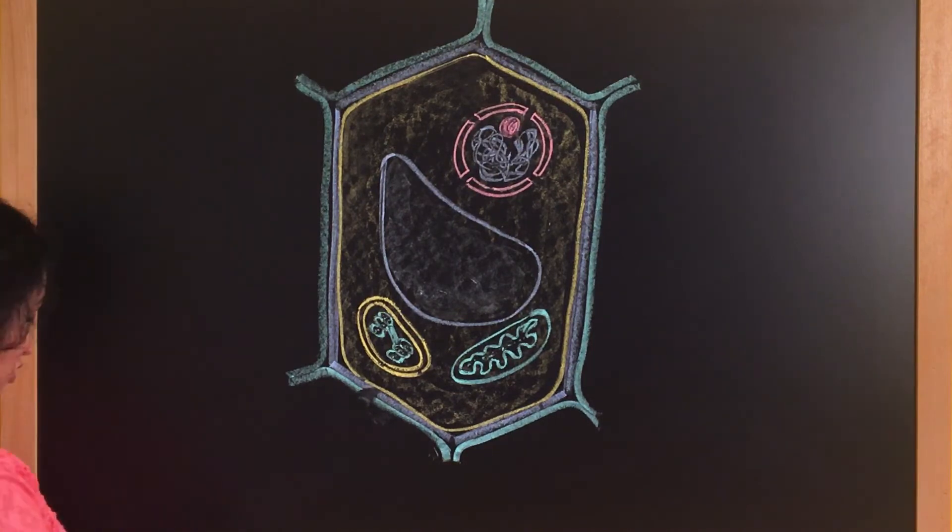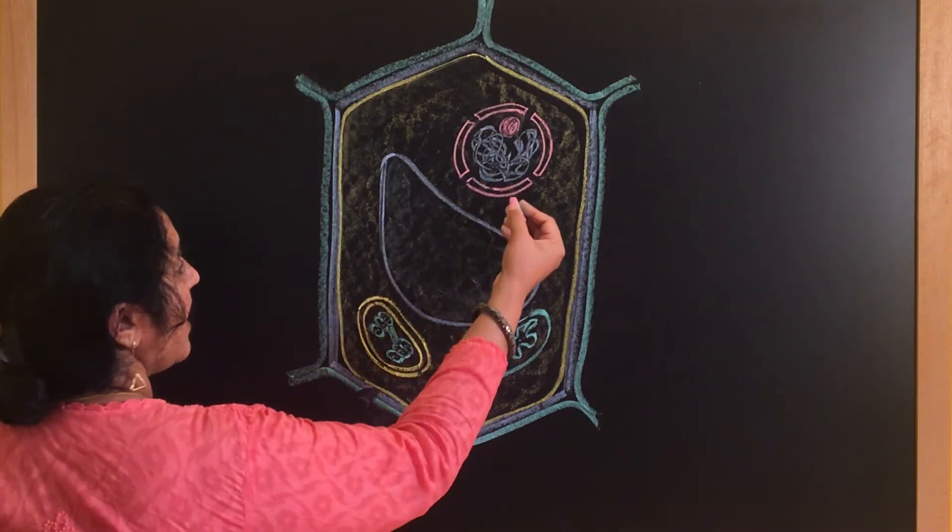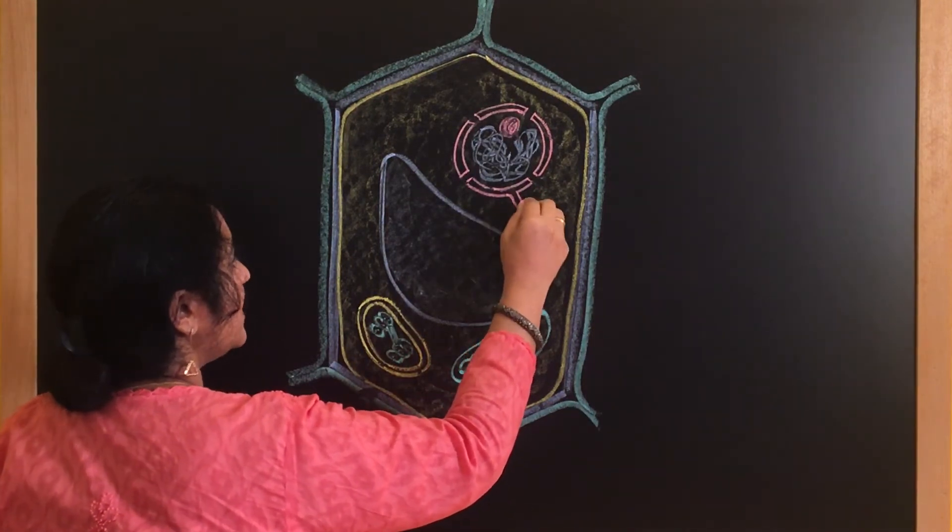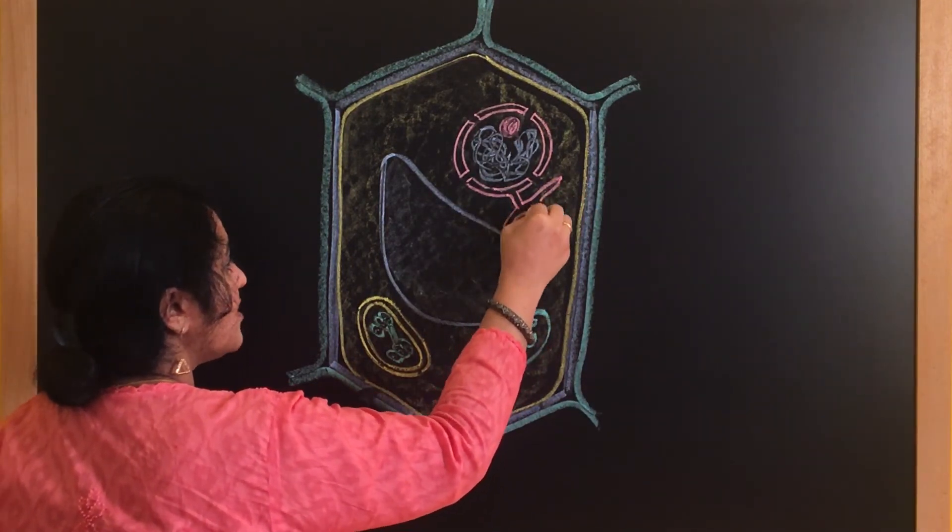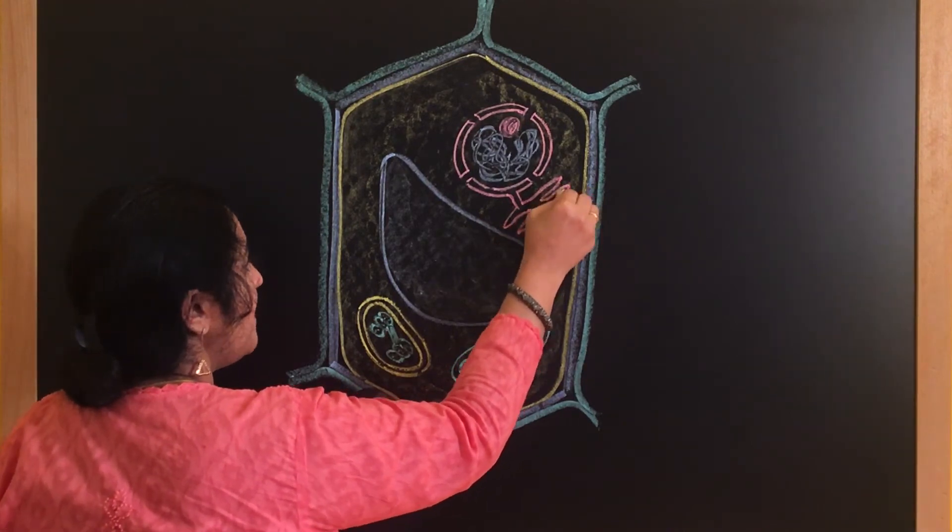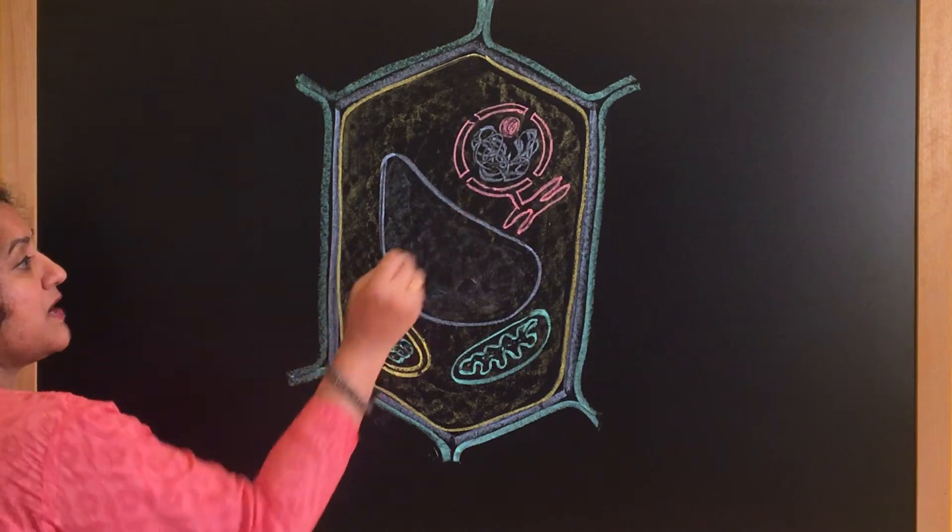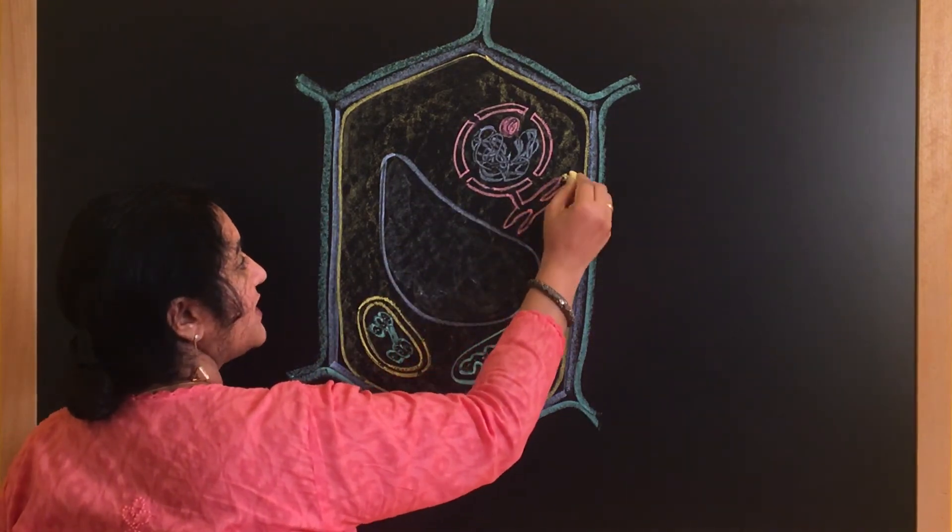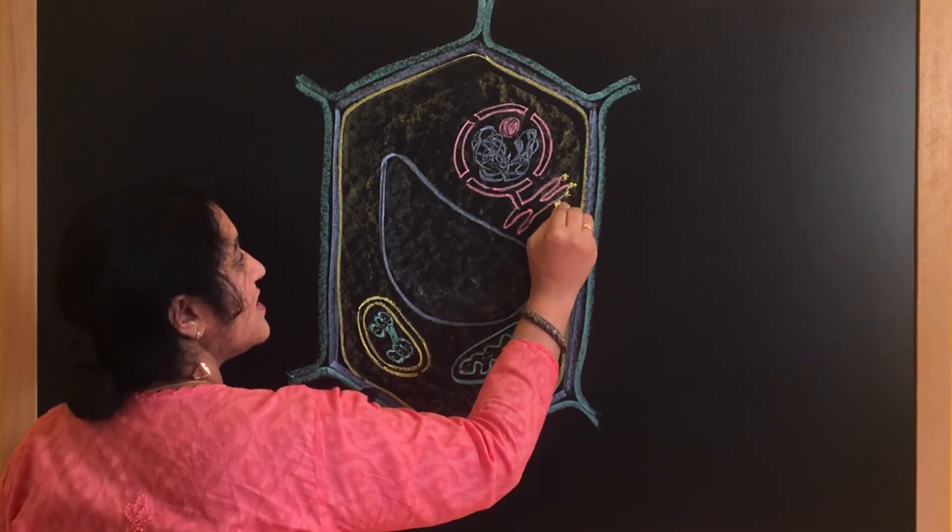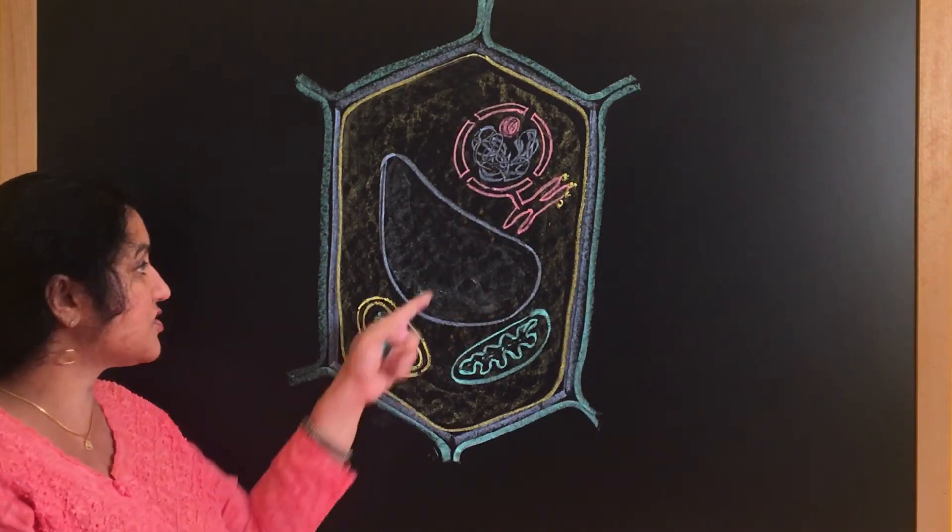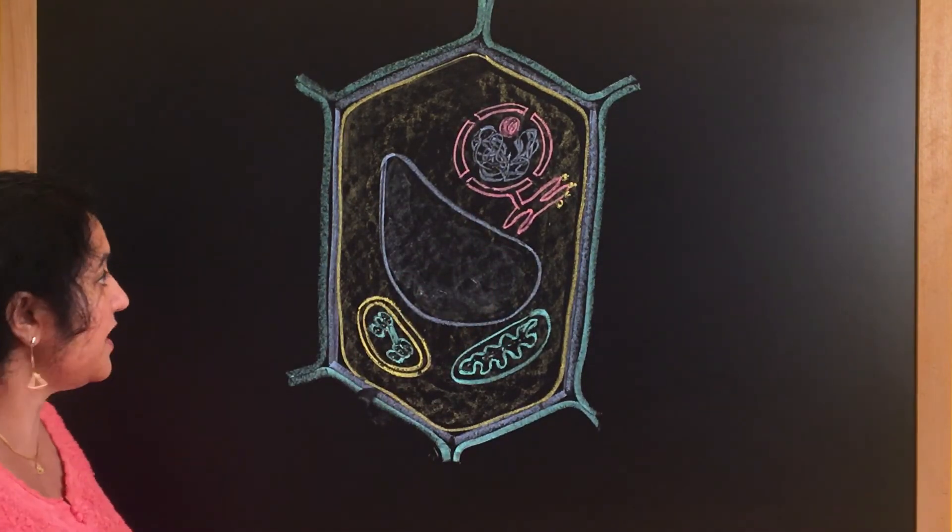Now it also contains, definitely it will be having endoplasmic reticulum. So I will draw the endoplasmic reticulum as a tubular structure with numerous membranes, very closely packed layers. So this is the endoplasmic reticulum. Now if the endoplasmic reticulum is having ribosomes attached, it is called rough endoplasmic reticulum. And this side doesn't contain ribosomes, so it is called smooth endoplasmic reticulum.